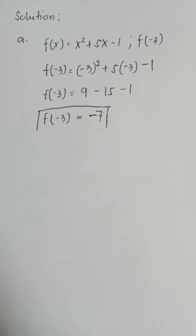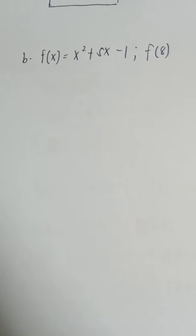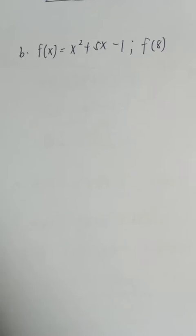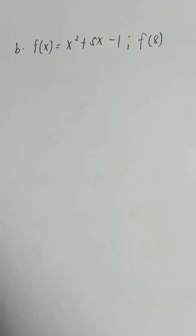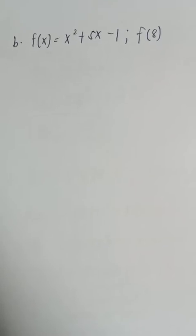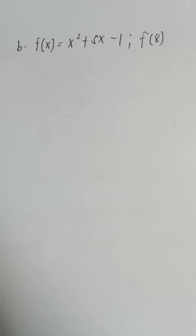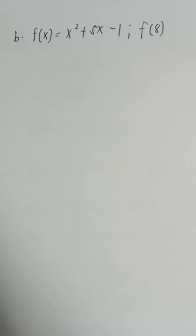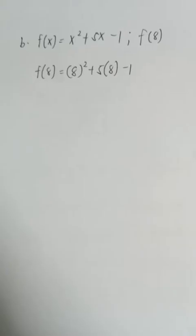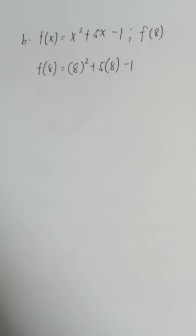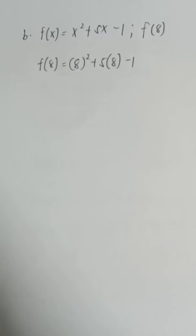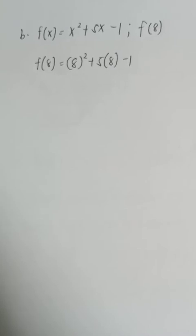Let's try to solve letter b. f of x is equal to x squared plus 5x minus 1, where the value of x is equal to 8. Let's try to evaluate. Your turn — you can pause the video and evaluate the given function. Let's find out if you get the correct solution. The same process: identify the given x, then do the substitution. Substitute the value of x, which is 8, into the function. So you have f of 8 is equal to 8 squared plus 5 times 8 minus 1.